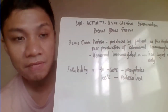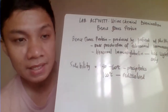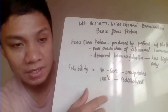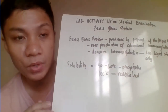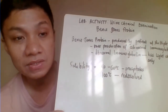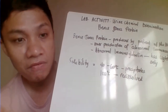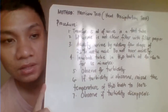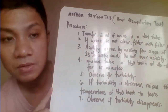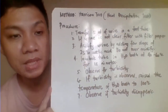But in the case of Bence Jones protein, if we increase the temperature to 100 degrees Celsius, the precipitation disappears. That is its unique solubility characteristic that differentiates it from other types of protein. We have here the method for determination of Bence Jones protein: the Harrison test, or heat precipitation test.